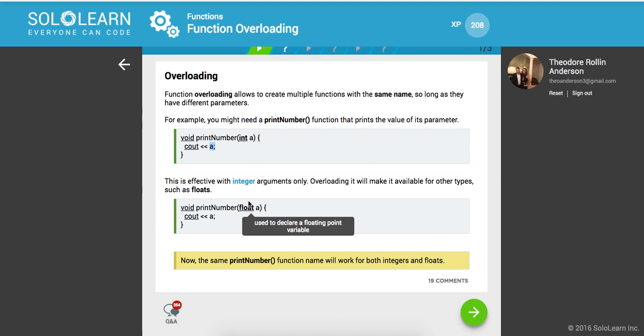So this takes in a float, whereas this takes in an integer. So we can sort of see how we're building our software in a more flexible way. Now the same print number function will work for both integers and floats.